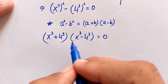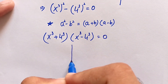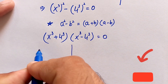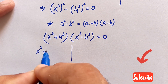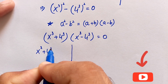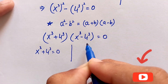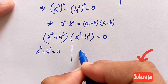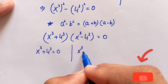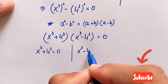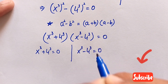From this factoring, we obtain two cases. Case one: x to the power of 3 plus 4 to the power of 3 is equal to 0. Case two: x to the power of 3 minus 4 to the power of 3 is equal to 0.